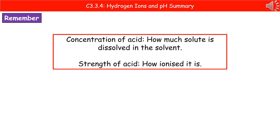Just to recap, there are two very different terms that we use in association with acids: concentration and strength. All too often people mix these two terms up, so we need to be really careful. Concentration refers to how much of the solute is dissolved in the solvent, whereas the strength of the acid is how ionized it is — so how many hydrogen ions have been released.